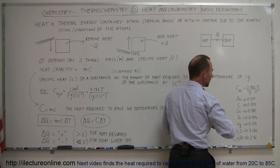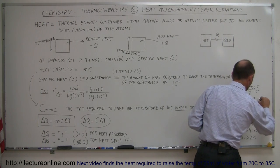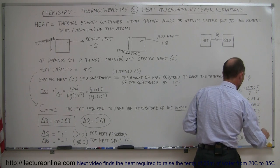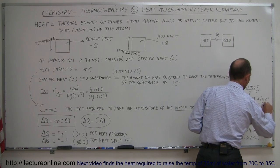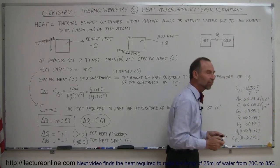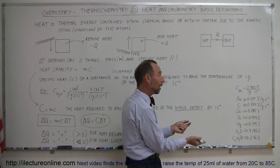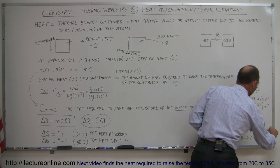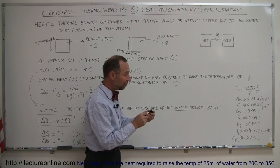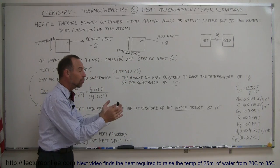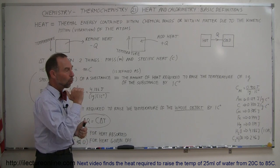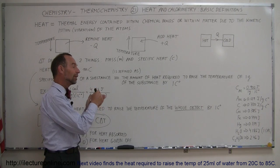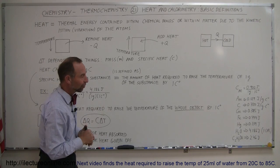We can write it as 4.186 joules per gram times centigrade degree — a certain amount of energy per gram of the substance causes it to rise by one degree centigrade. For water, 4.186 joules is exactly equal to one calorie. That's where the definition of calorie came from: if we add one calorie of energy to one gram of water, the temperature will go up by one degree centigrade — specifically from 14.5 to 15.5 degrees centigrade, but that's just a small formality.